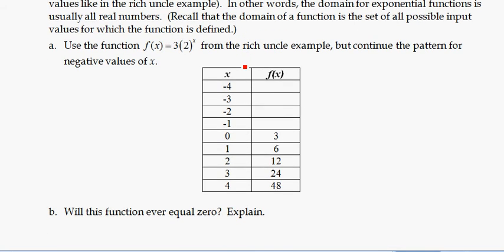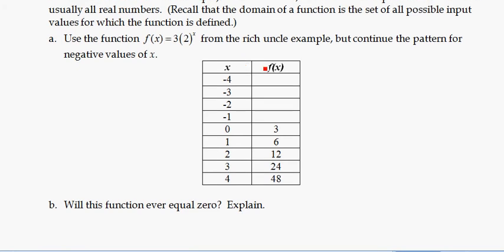So let's use this rich uncle example, but think about what would happen. What would it mean to have negative x values? So we saw from the rich uncle example that we're multiplying by 2 to get from one value to the next. So if I had to imagine working backwards, I need to come up with a number here that when I multiply it by 2, I get 3.